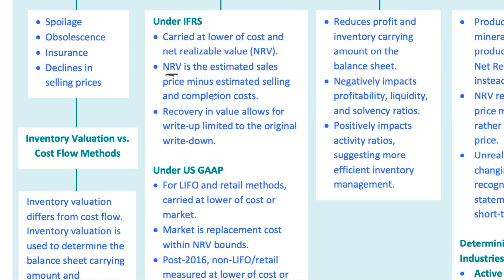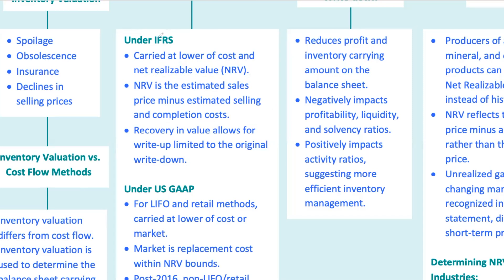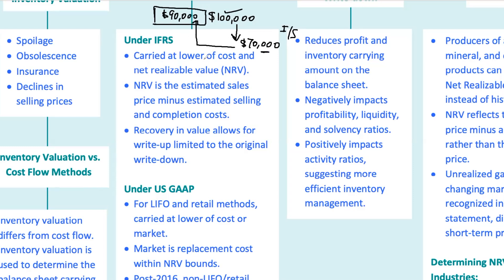NRV is the estimated selling price minus any costs required to complete and sell the inventory. For example, if you've got inventory initially valued at $100,000 and due to market conditions the NRV drops to $70,000, under IFRS you need to write down that inventory to $70,000, and this write-down shows up in the income statement as a loss. But if the market picks back up and the NRV rises to $90,000, IFRS allows you to write the inventory back up, but only to the extent of the original write-down — so back up to $90,000, but not the original $100,000.